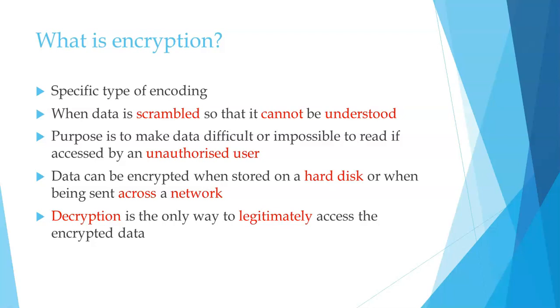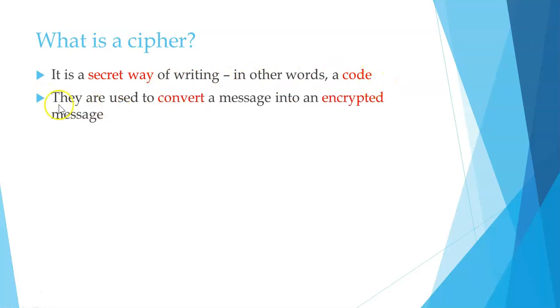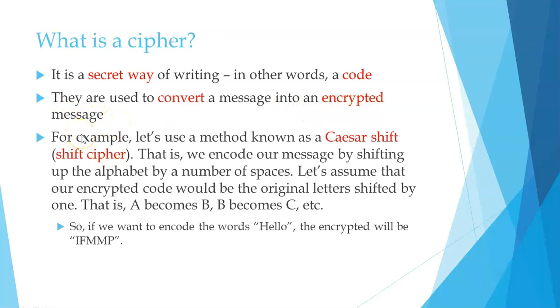What is a cipher? It's a secret way of writing — in other words, a code. Ciphers are used to convert a message into an encrypted message. Your textbook talks about a method known as a shift cipher, also known as the Caesar shift. We encode a message by shifting up the alphabet by a number of spaces. Let's assume that our encrypted code would be the original letters shifted by one, so A becomes B, B becomes C, and so on.